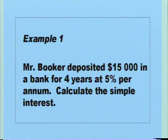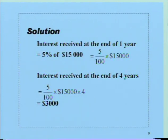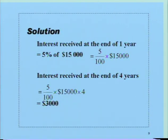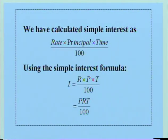Here is our first example. Mr. Booker deposited $15,000 in a bank for four years at 5% per annum. The interest received at the end of four years would be 5 over 100 times $15,000 times 4. This will work out to be $3,000. We have calculated simple interest using the formula: rate times principal times time — time always expressed in years — all divided by 100.